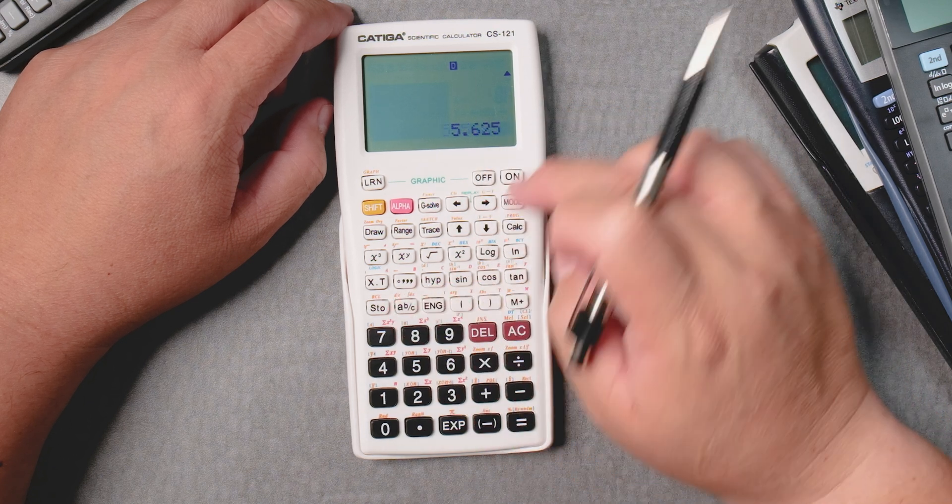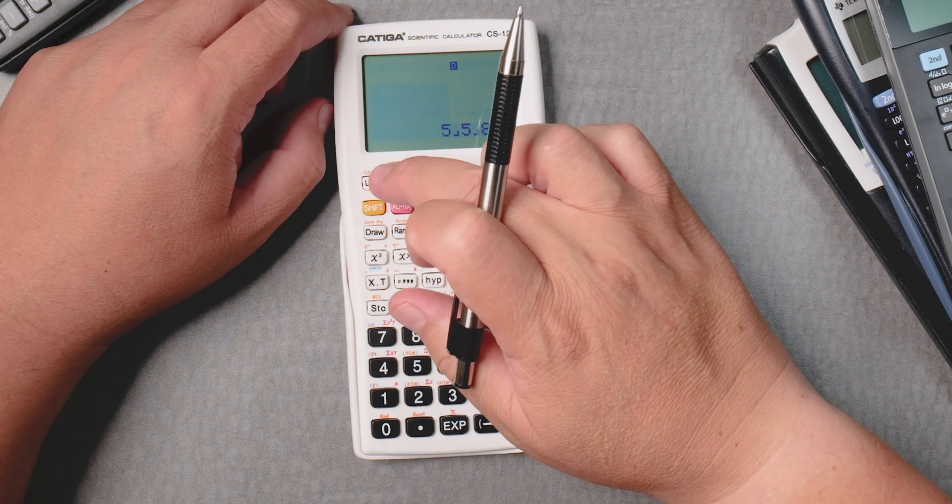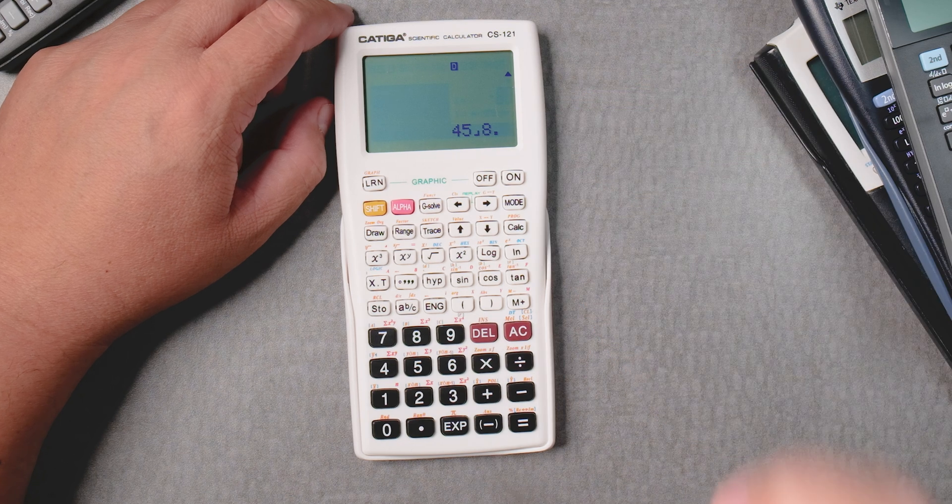You press the ABC button, it gives you the mixed number. Not the mixed number, the decimal. Press ABC. Go with shift ABC, it gives you the mixed number.